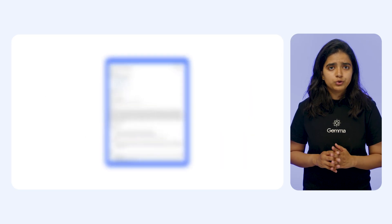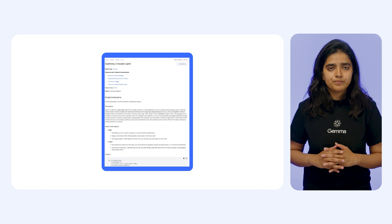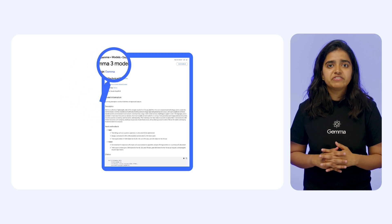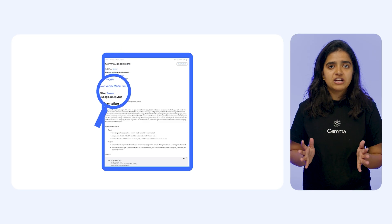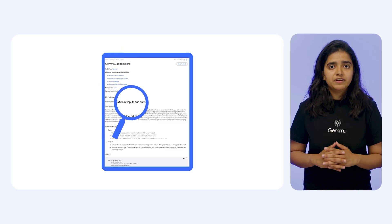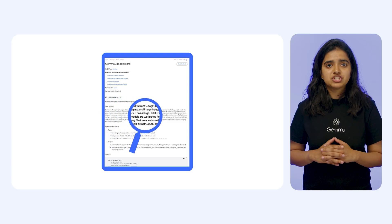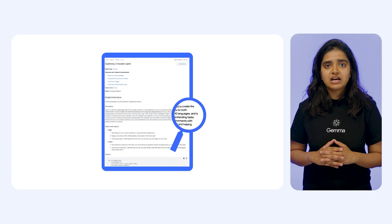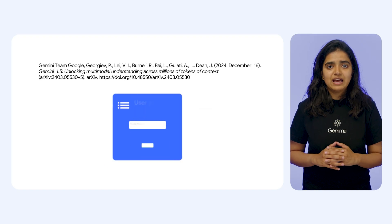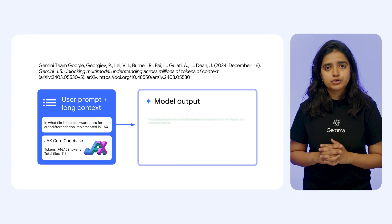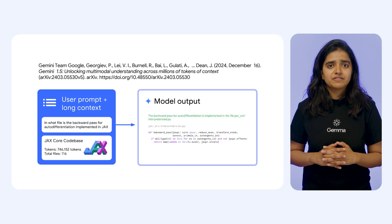So what can you do with such an extensive context window? Firstly, you can use these models to summarize and retrieve specific answers from very large inputs. Imagine feeding it complete product documentation or a company's detailed financial reports and getting concise summaries or direct answers to your questions. Secondly, it's great for understanding and debugging large code bases. The model can hold much more of the code's context, helping to identify issues or explain complex sections.